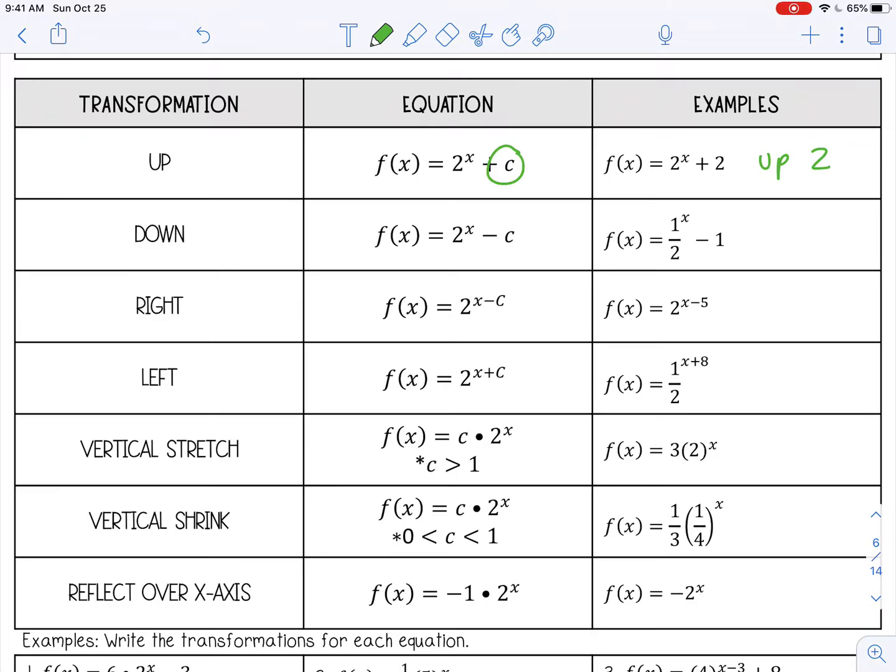To move a function down, you subtract at the end. So this will move this exponential function down 1. Now remember, this is just the parent function, and the only difference between these two is this is a growth and this is a decay. But the transformations still apply the same way.